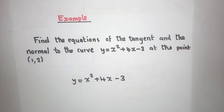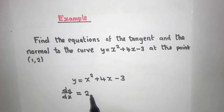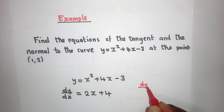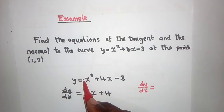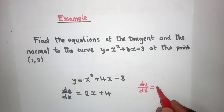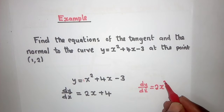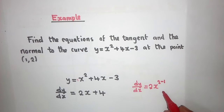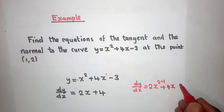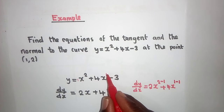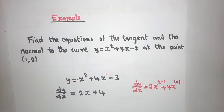So how did I find this dy/dx? You say dy/dx is equal to: take the power which is here, multiply with the number in front — in this case we have a 1, so 2 times 1 is 2 — then write the variable x to the power minus 1. Plus: the power here is 1, so 1 times 4 is 4, x to the power 1 minus 1. This is the procedure.